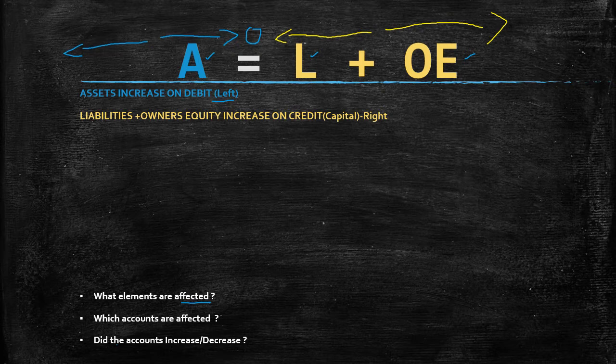Left means debit — it doesn't mean plus or minus, it just means debit. The right hand side means credit; it doesn't mean a plus. Let's look at some examples here.